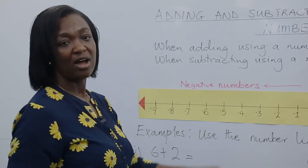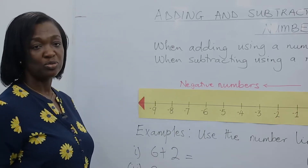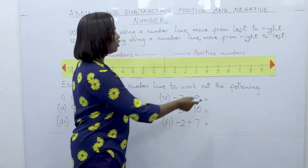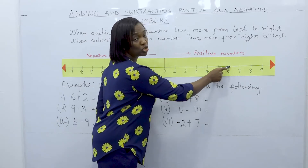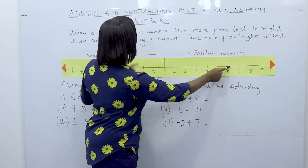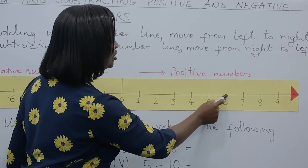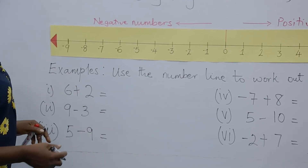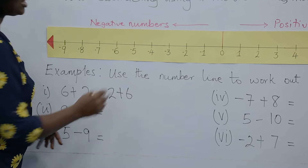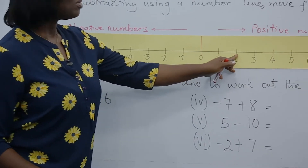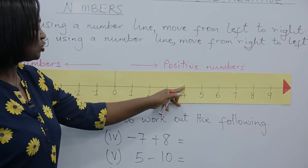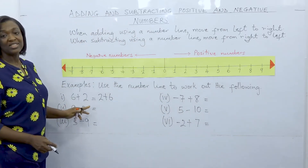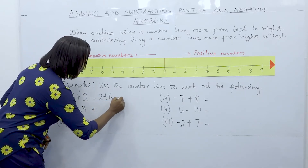For example, use the number line to work out six plus two. This is six on the number line, and we want to add two to six. From six we go two steps forward because we are adding — moving from left to right. One, two. Six plus two is equal to eight. Six plus two is the same as two plus six — let's check: from two, we count six steps and land on eight. So six plus two equals two plus six, and the answer is eight.